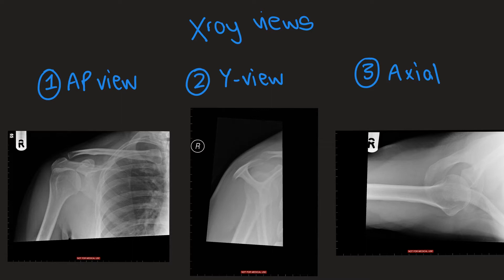On an AP view, what you're looking for in regard to the glenohumeral joint is correct alignment of the glenoid with the humeral head. The Y view is a lateral view in which you see the Y shape of the scapula. Anteriorly you see the coracoid, posteriorly you have the acromion and here you have the scapular body. Normally you should see the humeral head lying directly on top of this Y shape. On the axial view you should see the normal congruency of the glenoid and the humeral head.